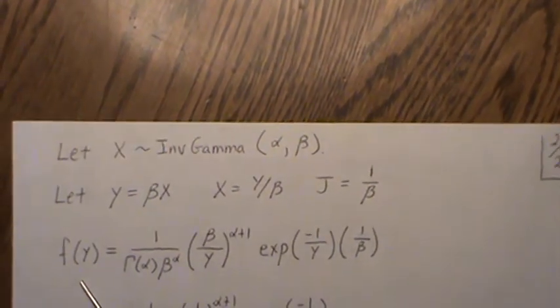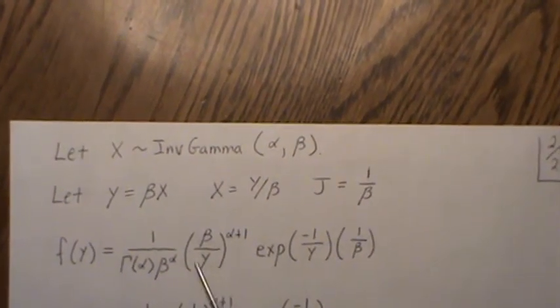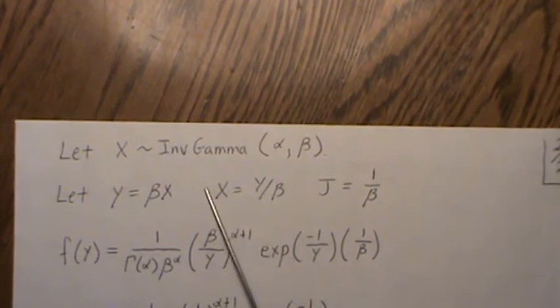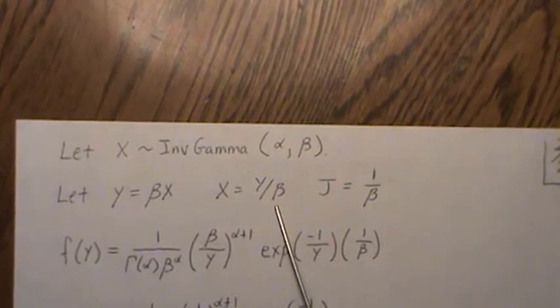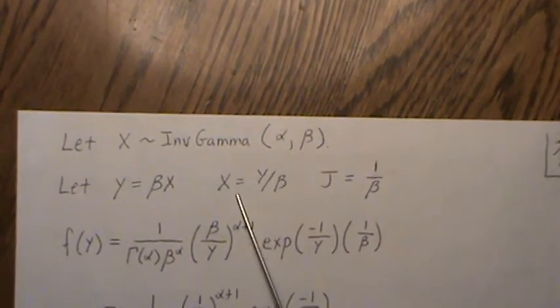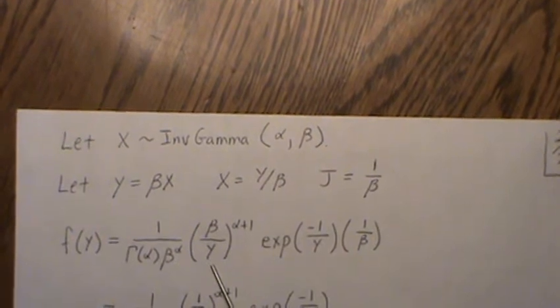So then the density becomes this. It's the function of your inverse gamma, but you plug in this value for your X. Since it was 1 over X and you plug in X, then it becomes beta over Y.